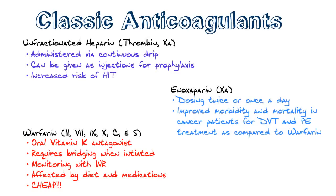Enoxaparin, otherwise known as Lovenox, is generally dosed twice or once a day and is given subcutaneously. We commonly use enoxaparin for either prophylaxis for DVTs and PEs, or for therapy — so if someone has a DVT or PE, for therapeutic use. There is a decreased risk of HIT, heparin-induced thrombocytopenia, with enoxaparin. In addition, there has been noted improved morbidity and mortality in cancer patients treated with enoxaparin for DVTs and PEs, as compared to coumadin or warfarin.